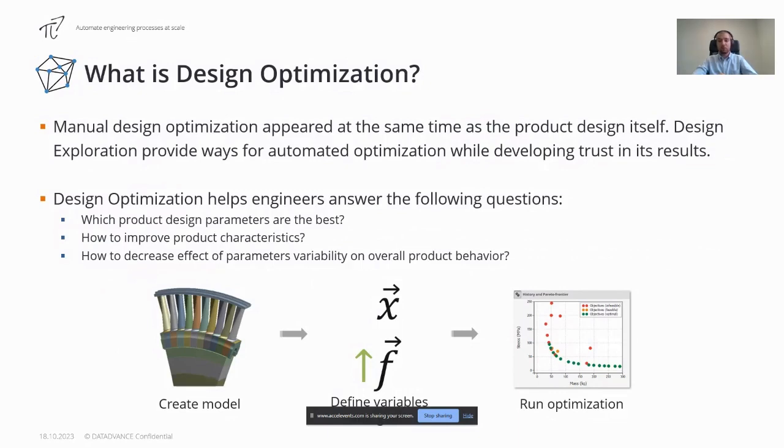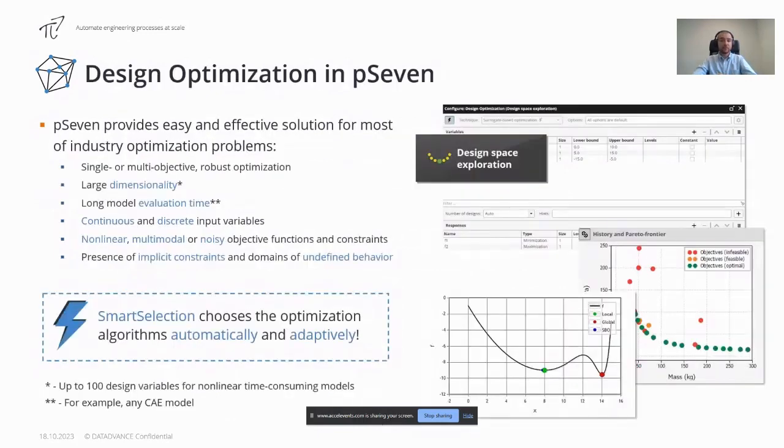To set up an optimization test, we need to decide which parameters will vary, what will be the objective function, and what constraints we need to respect. Often in engineering, optimization tasks have a set of specific aspects that often blocks the use of open source or academic tools. Such aspects can be easily considered during the design optimization process in pSeven. For example, in the case of large dimensionality, pSeven allows handling optimization problems with hundreds of design variables, dozens of constraints, and multiple objective functions. pSeven also supports advanced problem statements, so any combination of tasks with continuous and discrete variables, with linear and non-linear constraints, or with noisy objectives is possible.